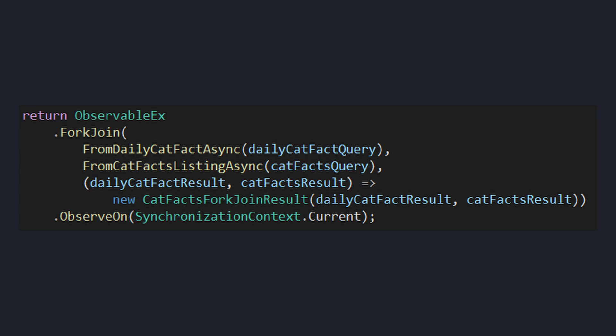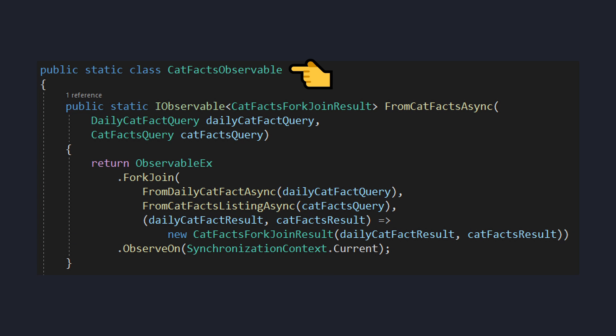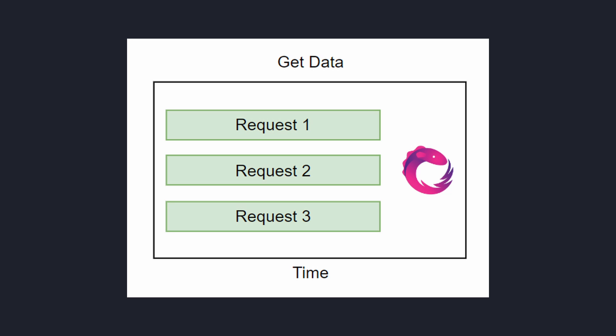To summarize: we used ForkJoin to fetch our daily cat fact and our cat fact listing in parallel, which allows us to get data for our application faster rather than making these requests sequentially. We also made sure to observe on SynchronizationContext.Current — the UI thread — so that our UI didn't accidentally display duplicated cat fact listing data. We caught errors on our inner ForkJoin observables so that if one observable fails, we don't fail the entire ForkJoin. Lastly, we extracted our custom observable into another class so that our view model was less cluttered, our observable was more reusable, and we could further extract methods to make our observable more readable.